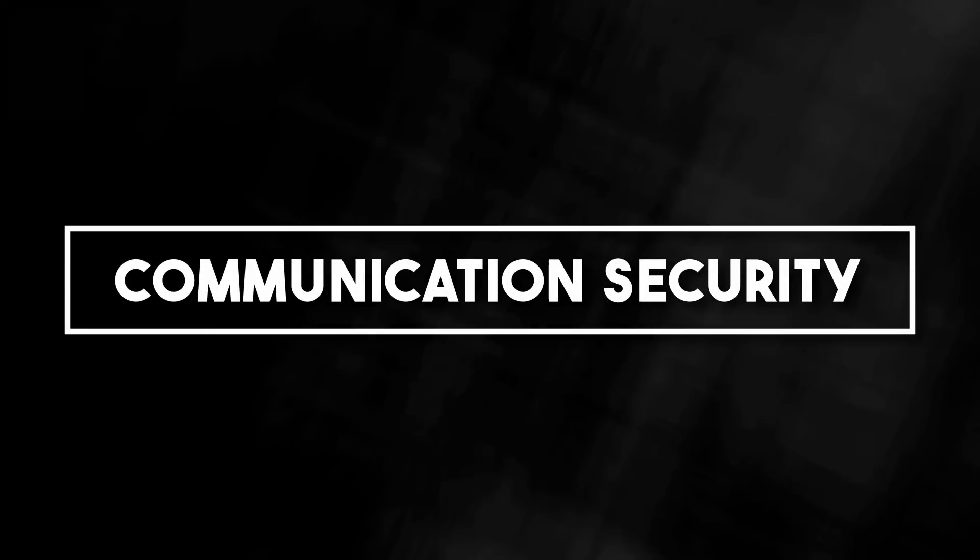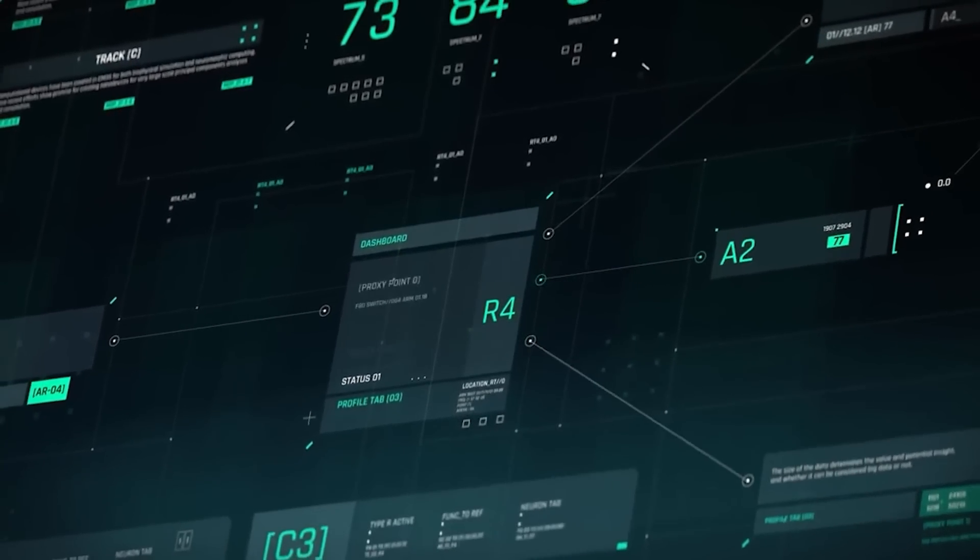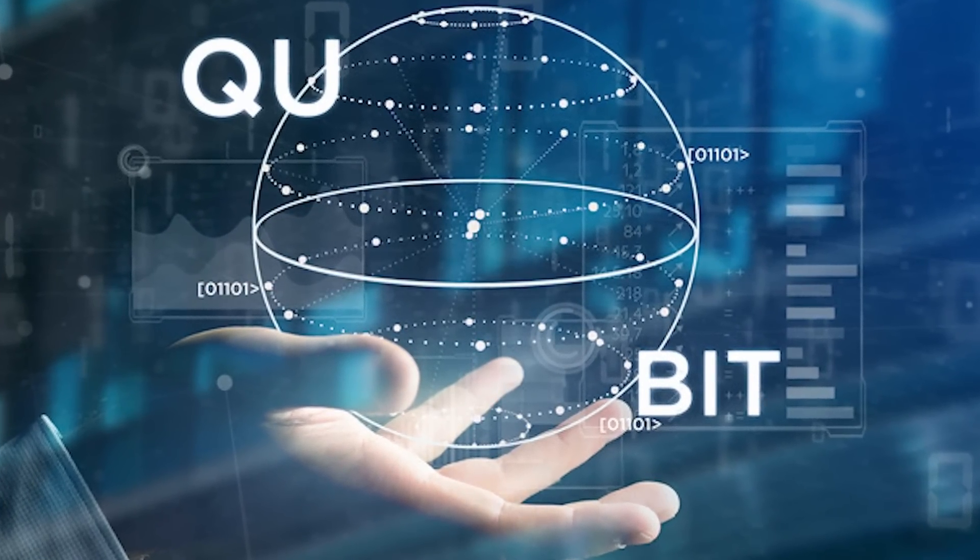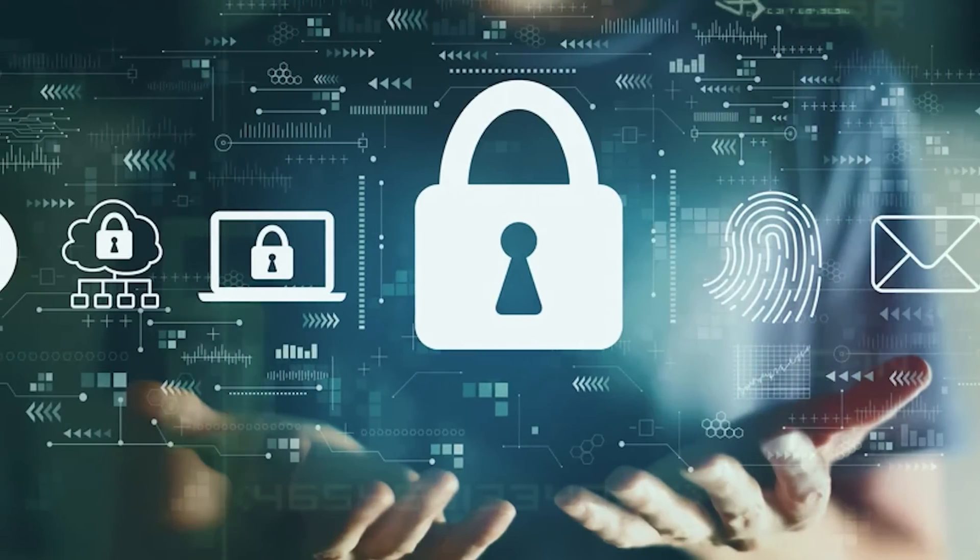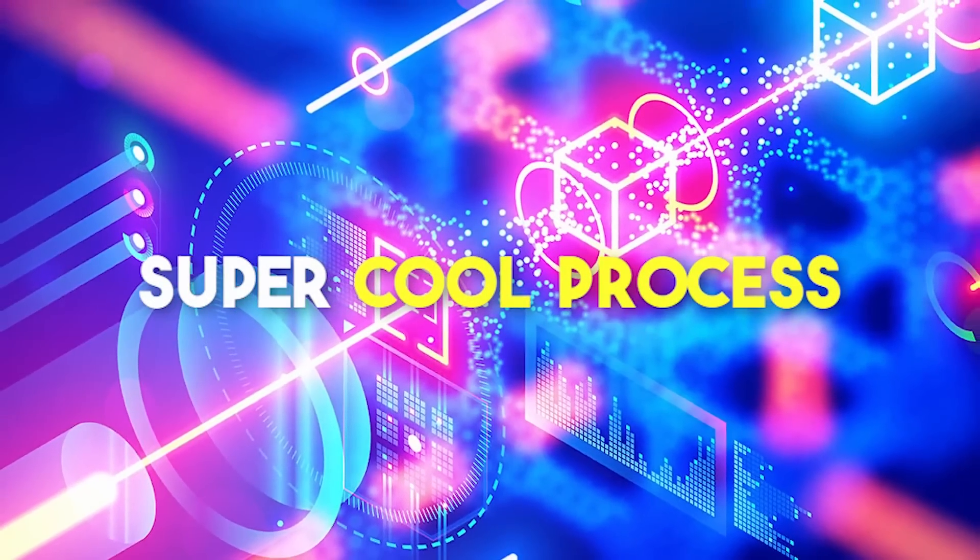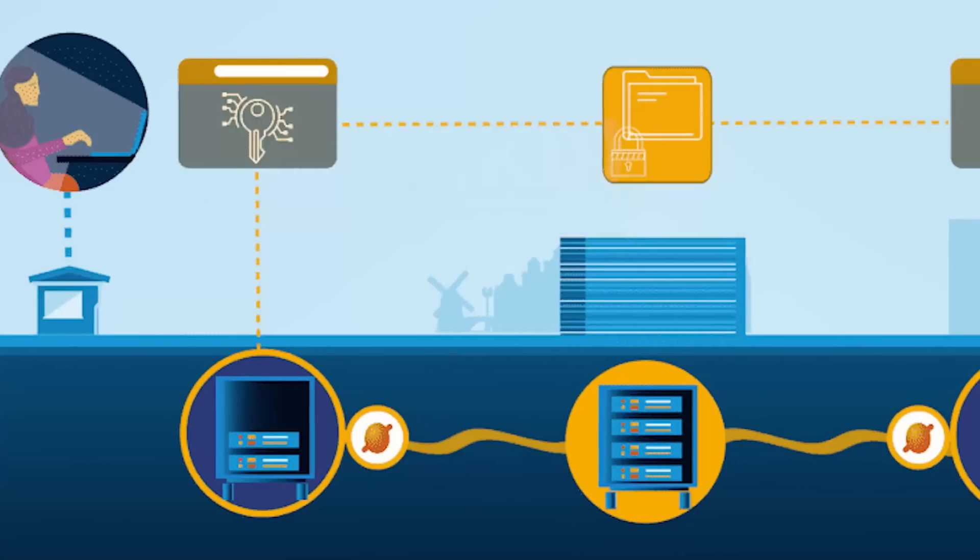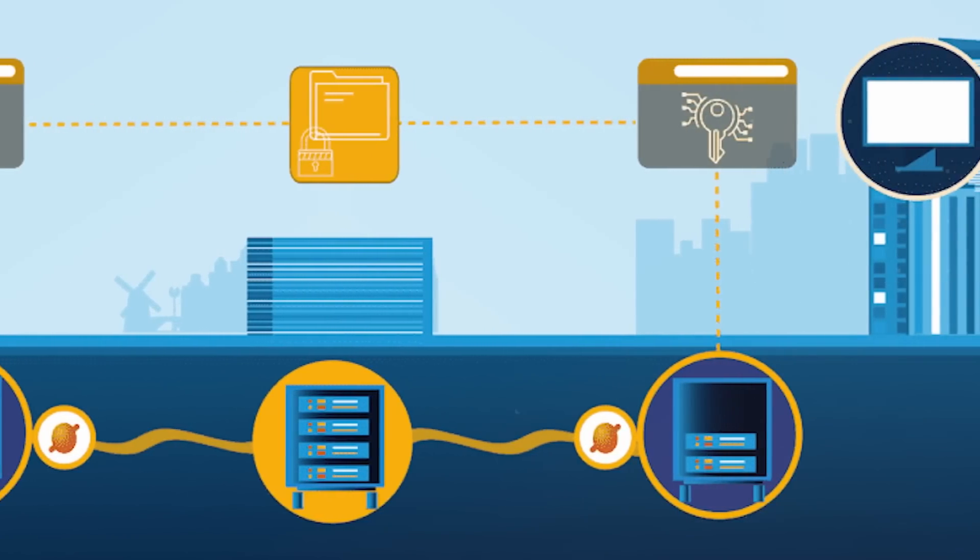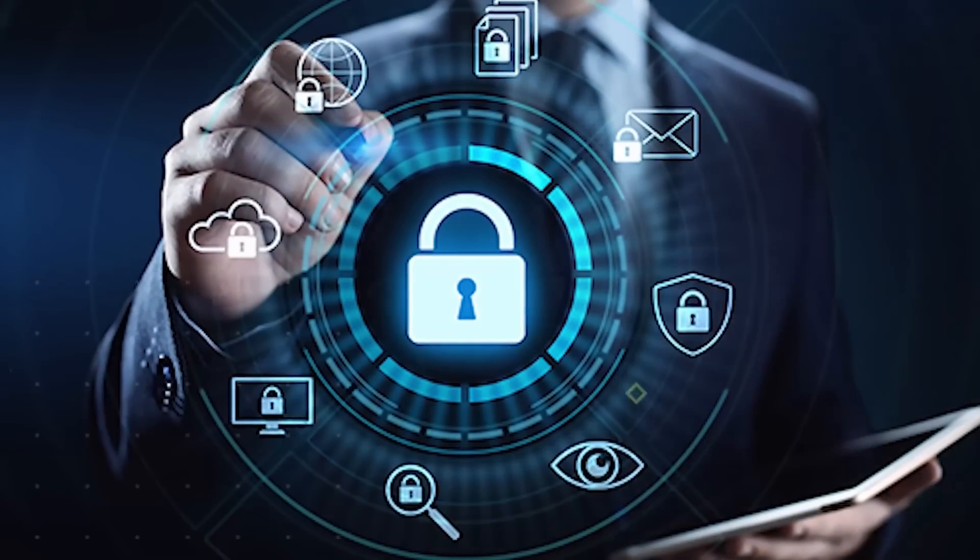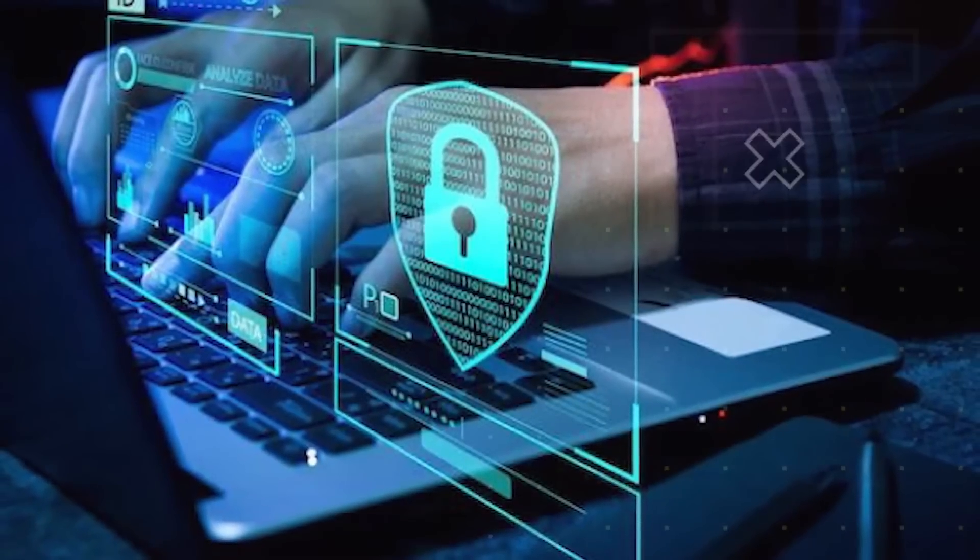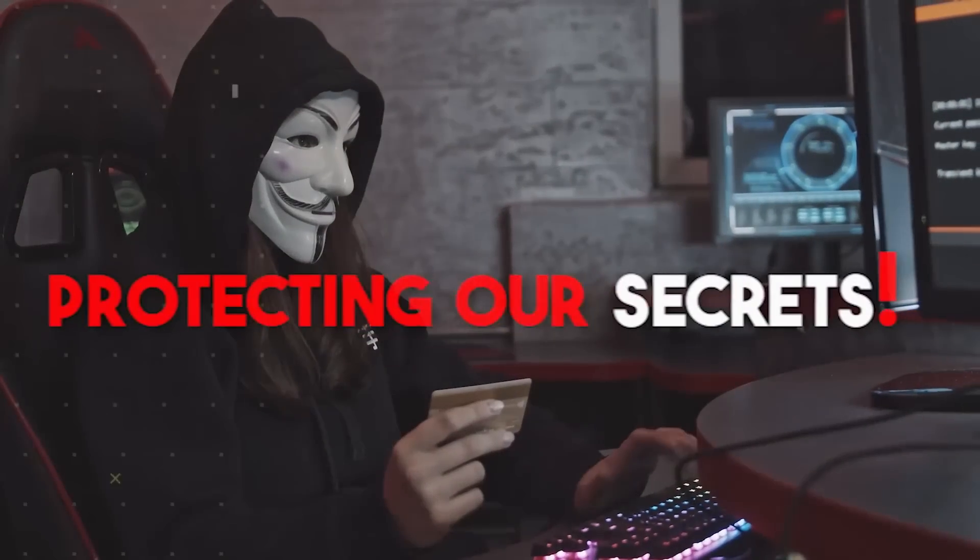Number two, communication security. Quantum internet has the power to revolutionize communication security. The special quantum properties of qubits make it nearly impossible for anyone to intercept and decode quantum encrypted messages. There's this super cool process called quantum key distribution, also known as QKD, where two parties can share a secret cryptographic key over the quantum network, without anyone snooping in. It's like having an unbreakable lock for your information, making sure it stays safe and secure. The quantum internet is here to save the day when it comes to protecting our secrets.